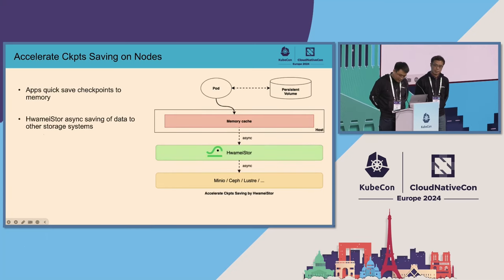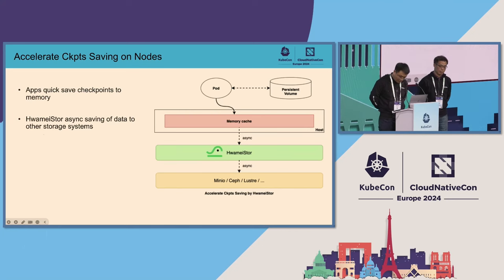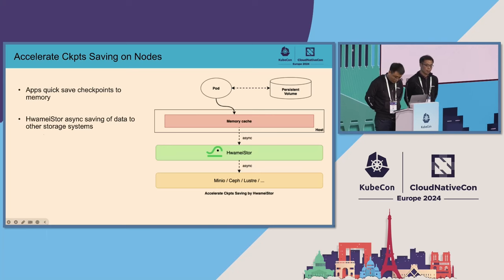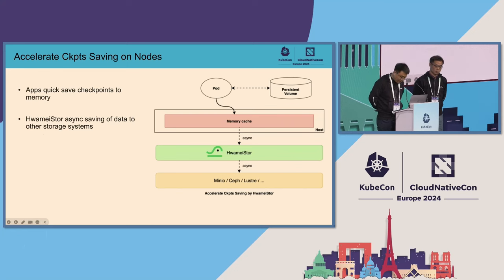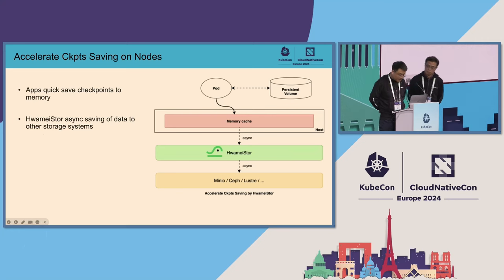In parallel training, some tasks may fail, leading to interruptions in the training process. To prevent loss of previous training progress, it's essential to frequently save checkpoints. HwamiStore offers memory-based volumes for storing checkpoints, and to ensure these checkpoints can be accessed on other nodes within the cluster, HwamiStore assigns them to an in-class persistent storage system. That concludes the AI machine learning solution overview, and Simon will take over to present insights from other scenarios.